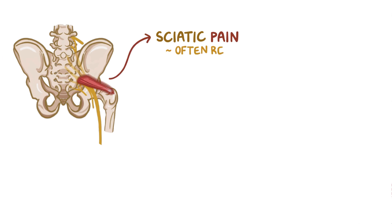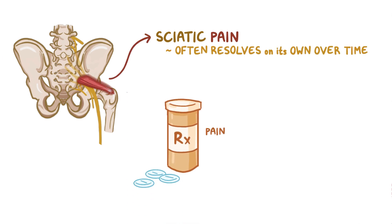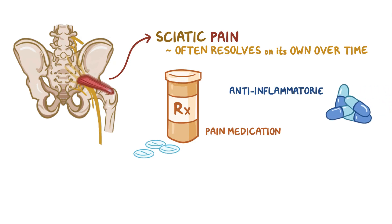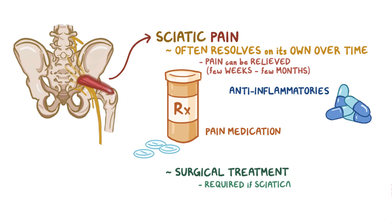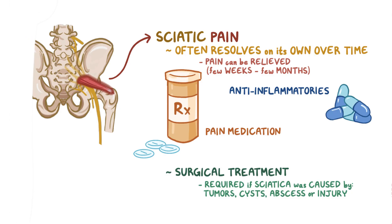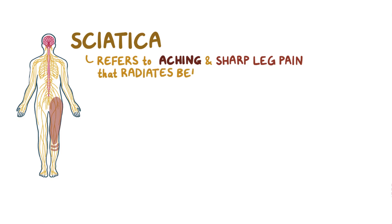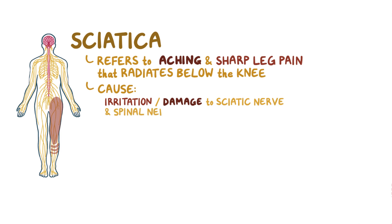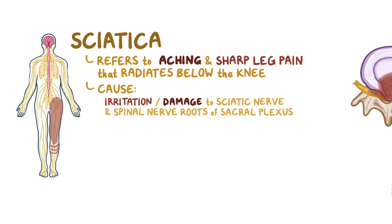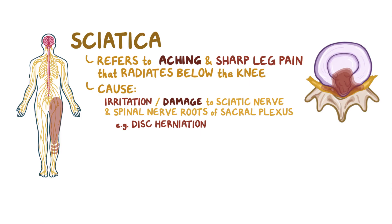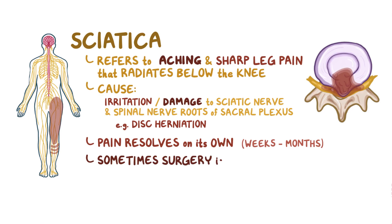Sciatic pain caused by inflammation often resolves on its own over time. With pain medication and anti-inflammatories, the pain can be relieved in a few weeks to a few months. Surgical treatment is required if the sciatica was caused by tumors, cysts, abscesses, or injury to the spinal cord. As a quick recap: sciatica refers to aching and sharp leg pains that radiate below the knee. It is caused by irritation or damage to the sciatic nerve and spinal nerve roots of the sacral plexus, most commonly as a result of disc herniation. Typically the pain resolves on its own over a few weeks to months, but sometimes surgery is required.